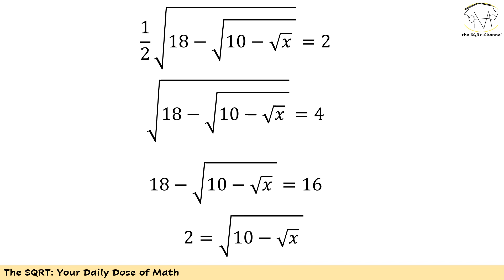Moving everything that has x on the right hand side and the constant values on the left hand side I will end up with 2 equals to radical 10 minus radical x.